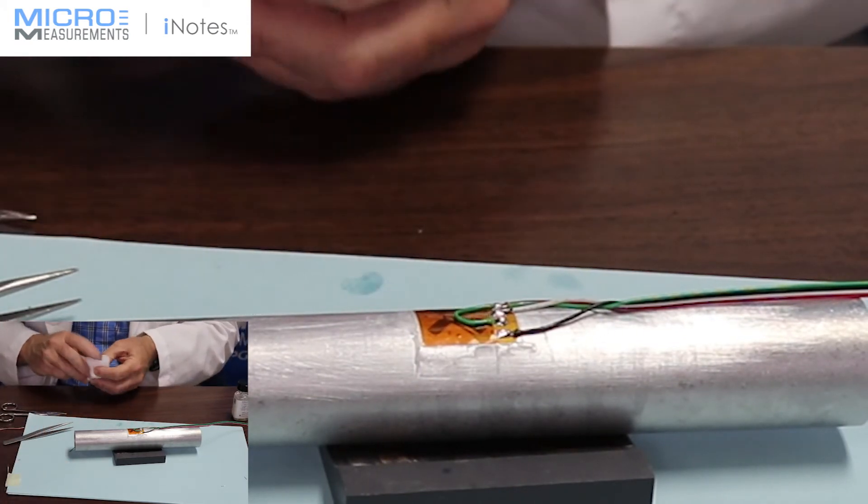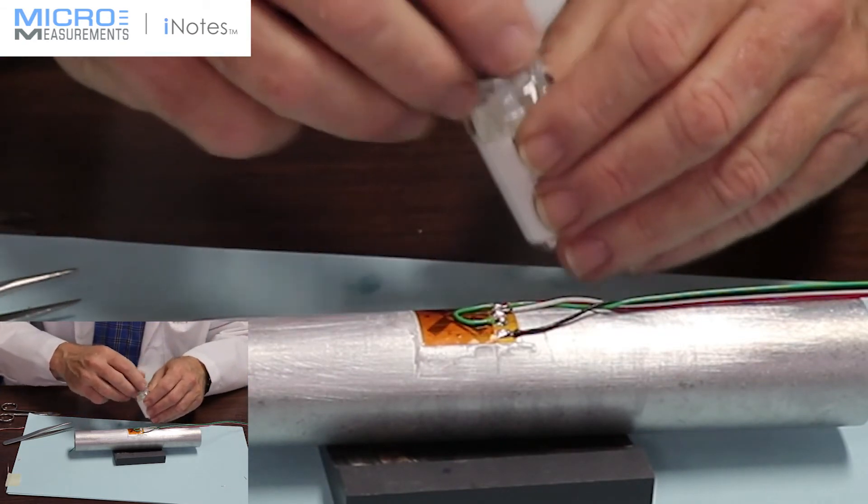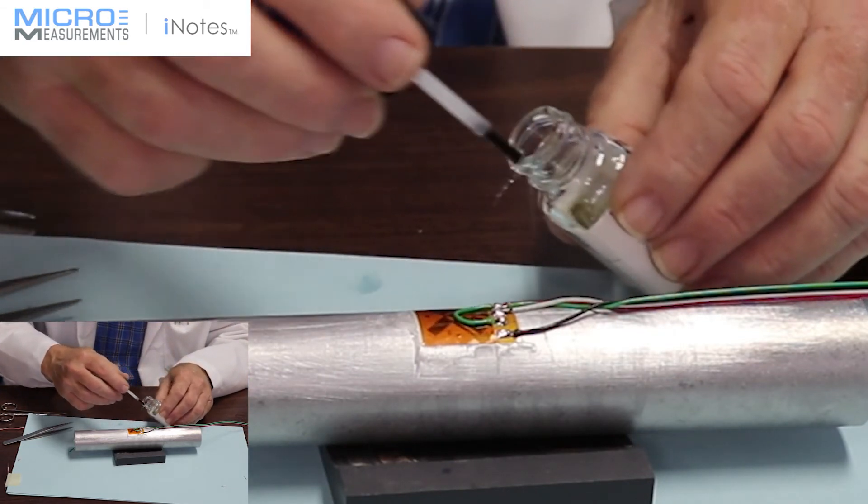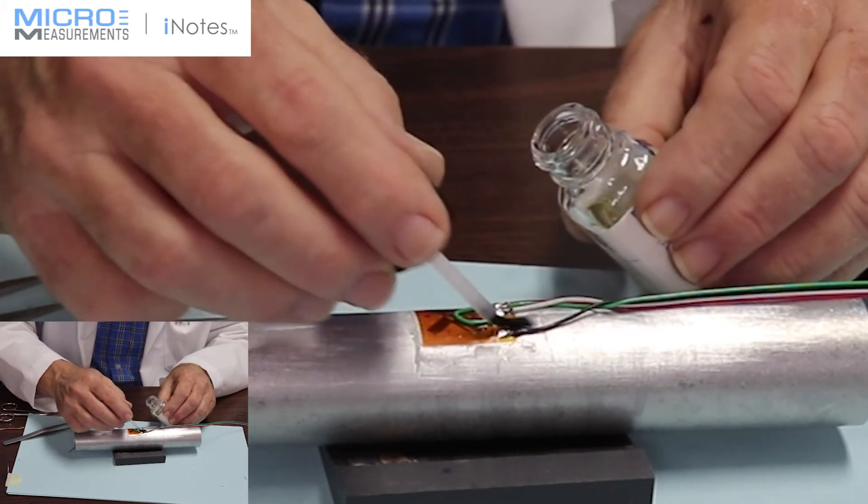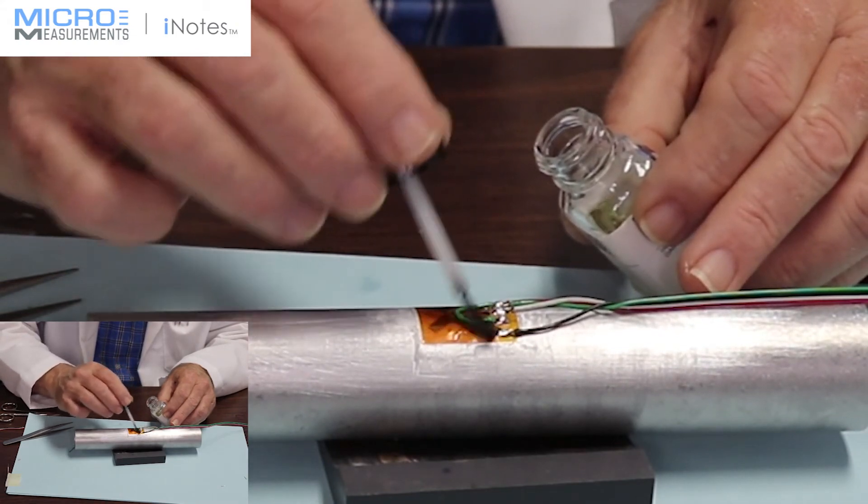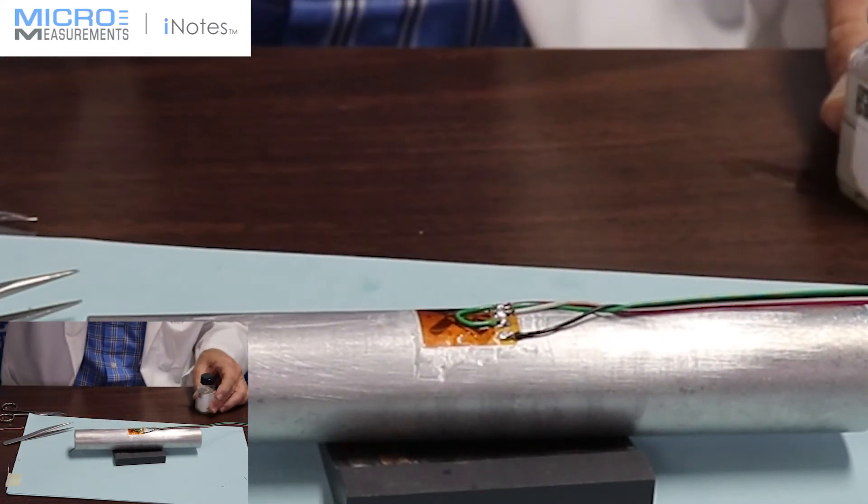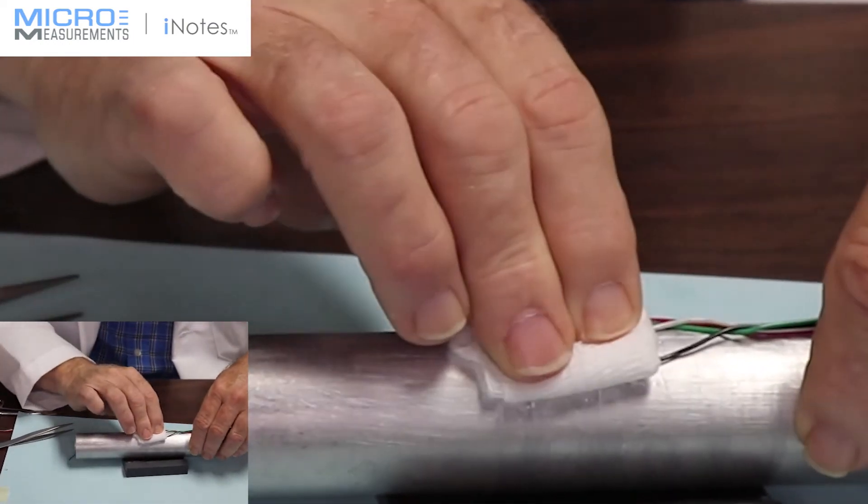It appears we have completed our installation. Just one more wash with the Rosin Solvent. And it's important to work up underneath the lead wires because there's where the flux will hide. And blot it away.